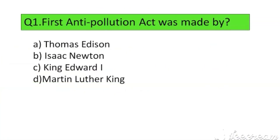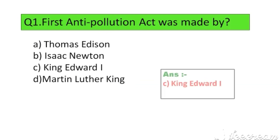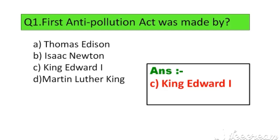Question number 1. First anti-pollution act was made by: Option A. Thomas Edison, B. Isaac Newton, C. King Edward I, D. Martin Luther King. The right answer is Option C: King Edward I.